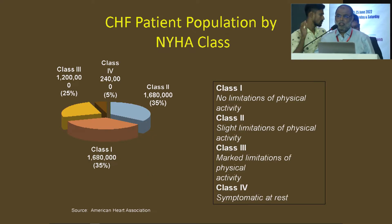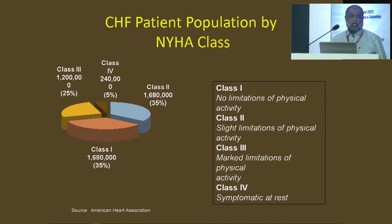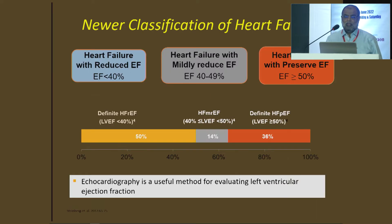The New York Heart Association classification: Class 1 is no limitation of physical activity, and Class 4 is symptomatic at rest, with Class 2 and Class 3 in between. This is the New York classification we know about heart failure.